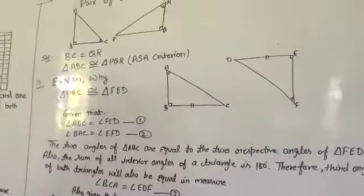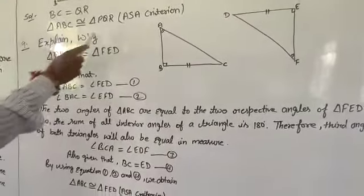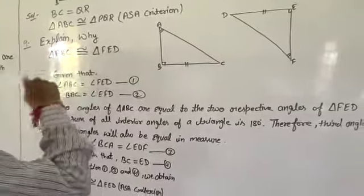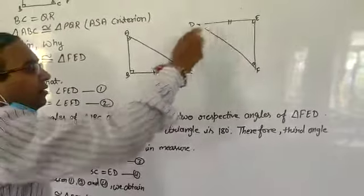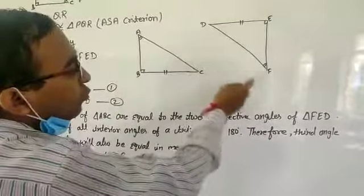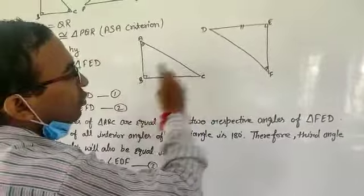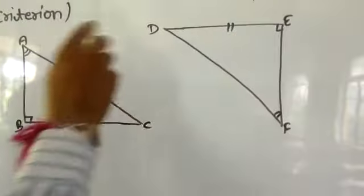Now the last portion of this exercise. Explain why triangle ABC is congruent to triangle FED. We are given two triangles where angle A is equal to angle F, angle B is equal to angle E, and BC is equal to ED.